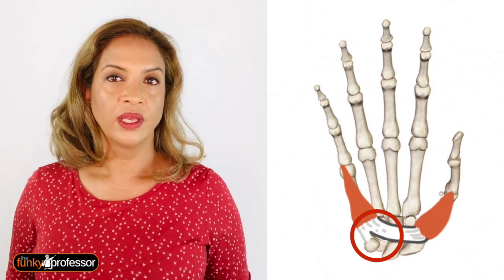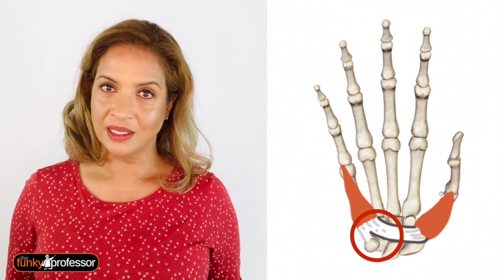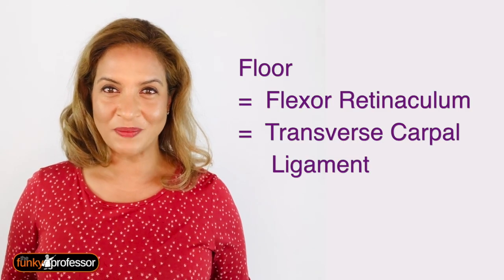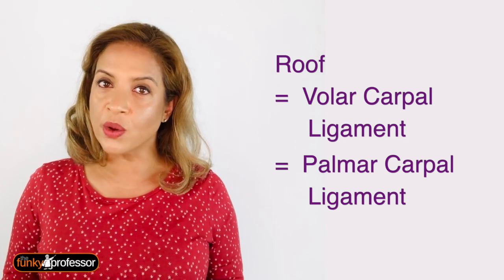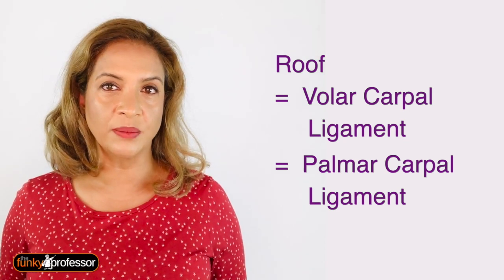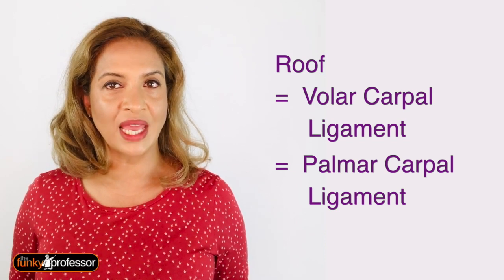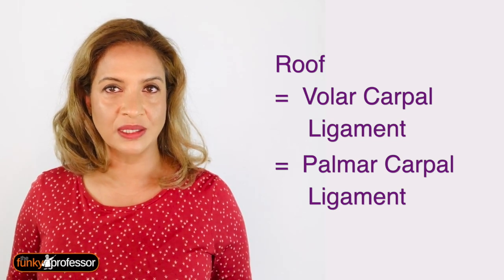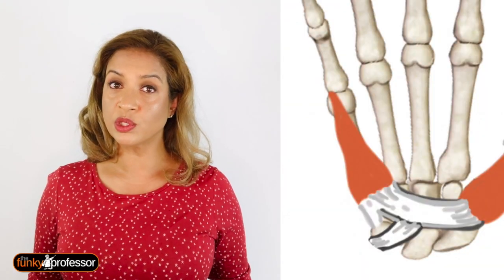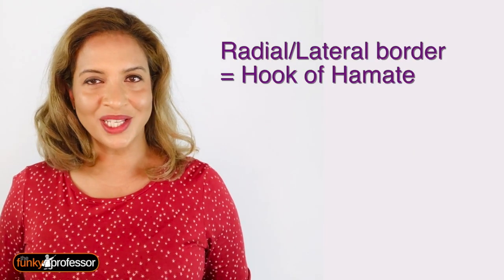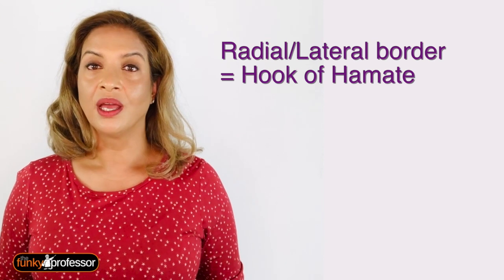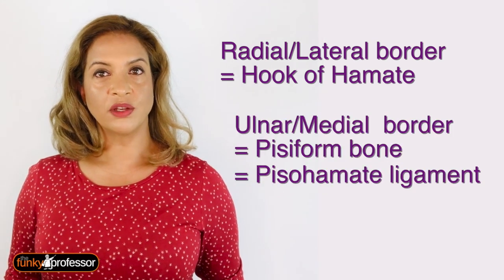Question three: Guyon's canal is found on the ulnar side of the wrist and is quite superficial, about four centimetres in length. It has four borders: the floor is made of the flexor retinaculum, also known as the transverse carpal ligament; the roof consists of the volar or palmar carpal ligament, a thickened portion of the antebrachial fascia of the wrist — it is more superficial and proximal to the flexor retinaculum. The radial border is the hook of the hamate bone, and the medial border is made of the pisiform bone along with the pisohamate ligament.